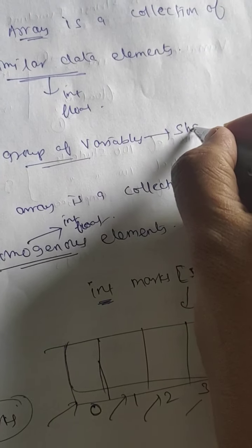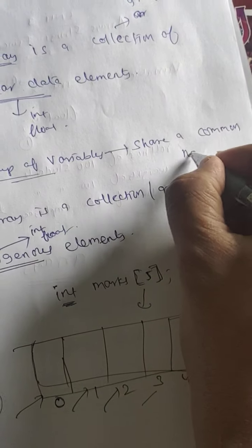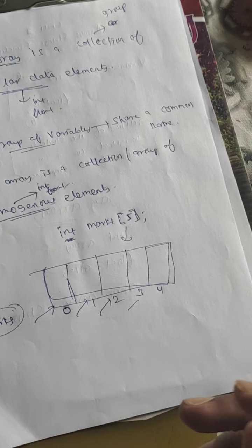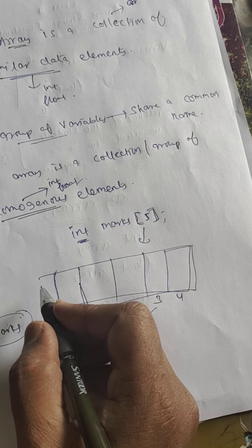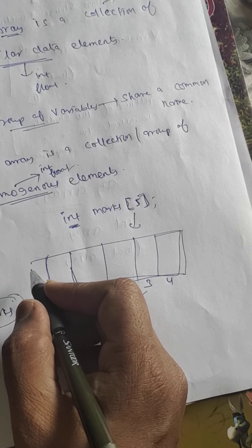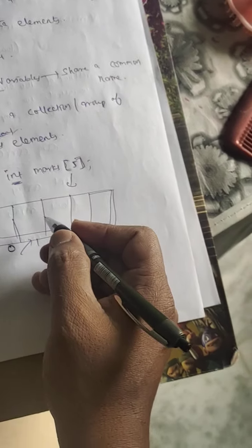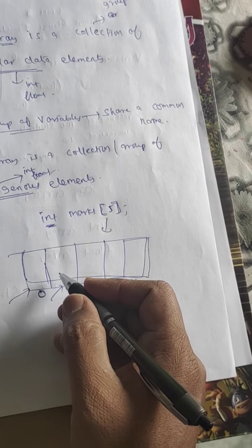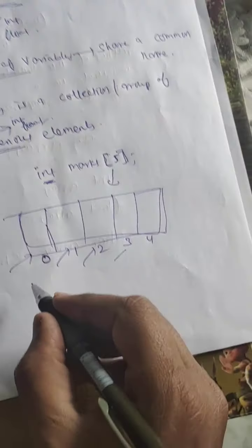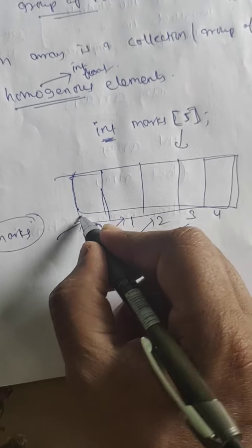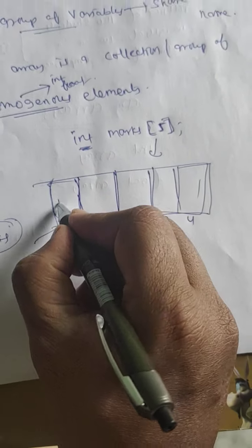So an array is a group of variables that will share a common name. Every element will have a common name, like students in our class - roll number one, roll number two, roll number three. Like we have students of BCA, so everybody belongs to the same group. BCA first year roll number one, BCA first year roll number two, like that. This is array in memory - first, second, third, fourth. What is the size here? Five.